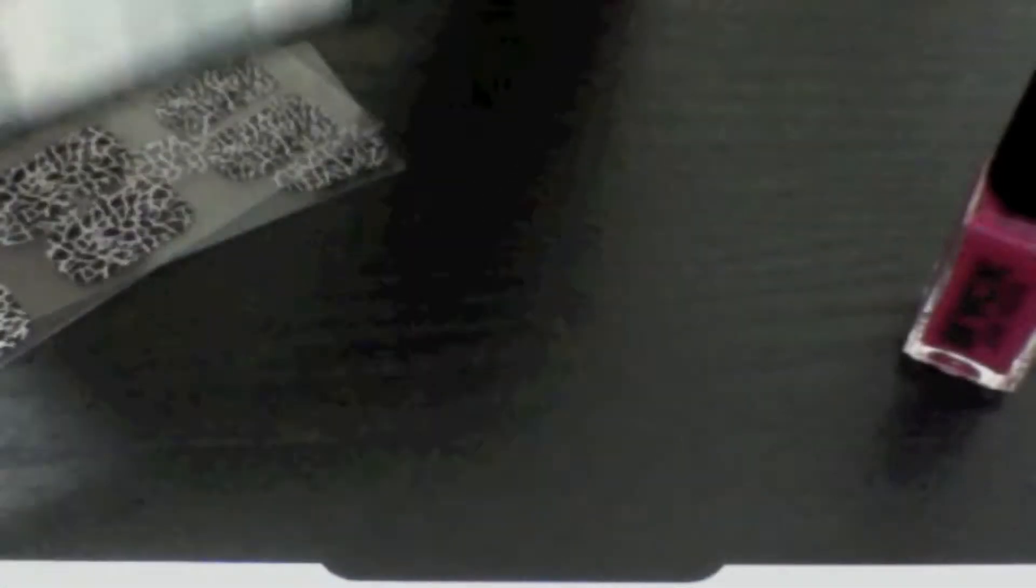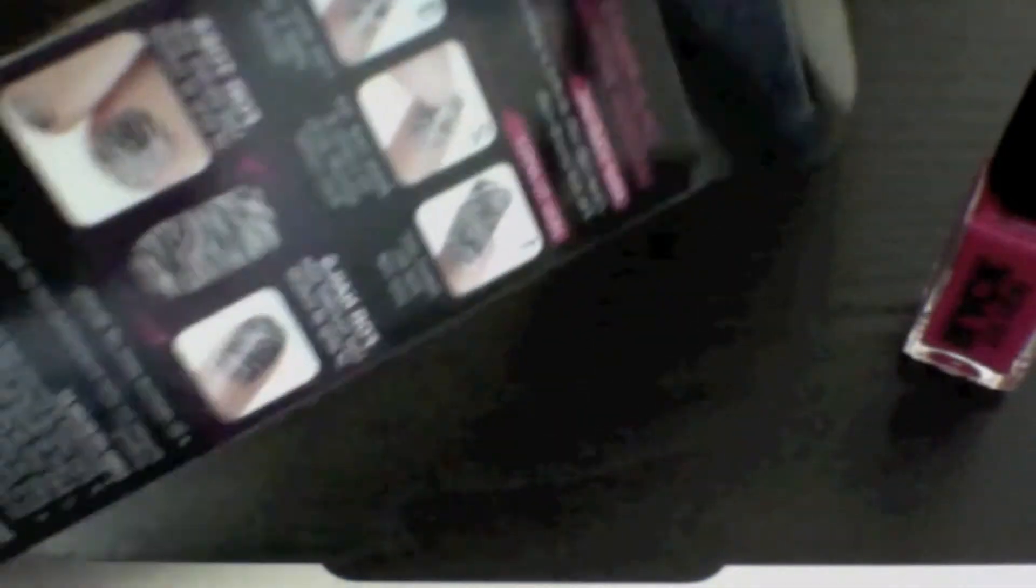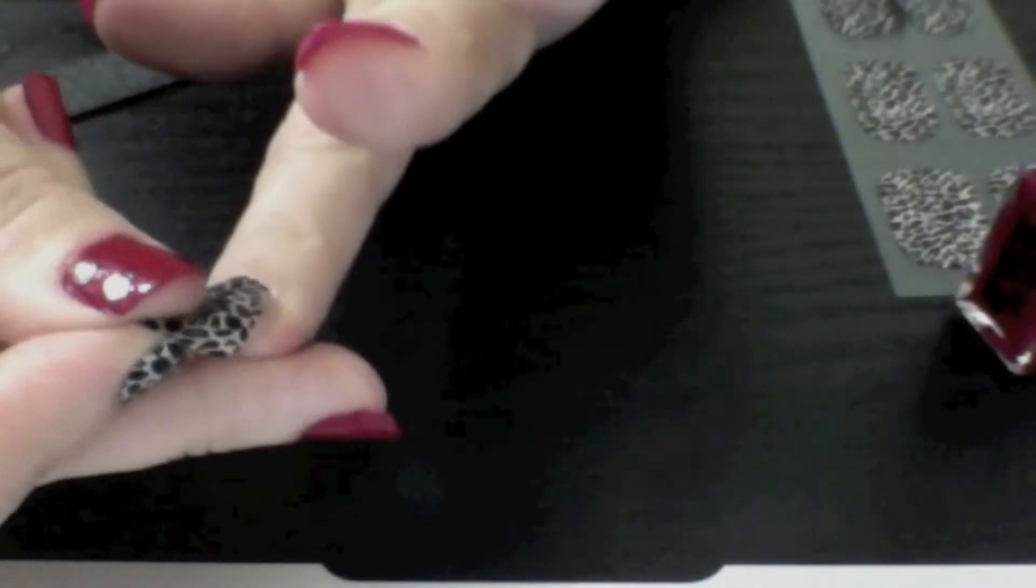So as you can see, I've covered all of the fingers except for the index. And we're going to be taking this kiss nail wrap and we're going to be applying it to the index finger.